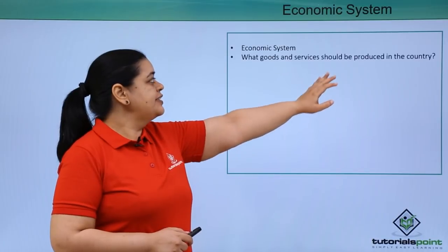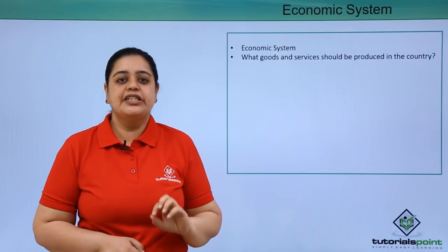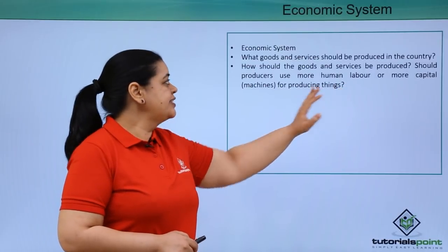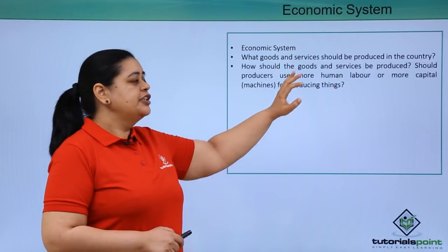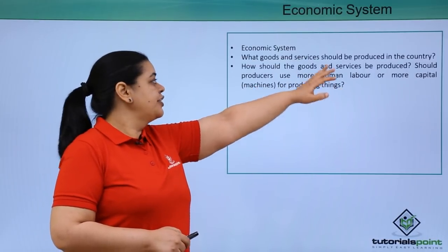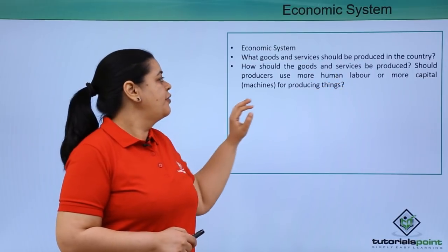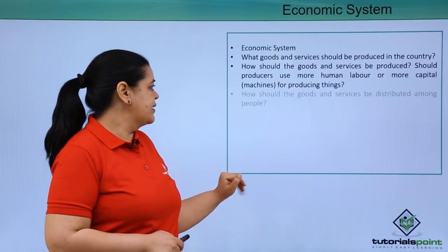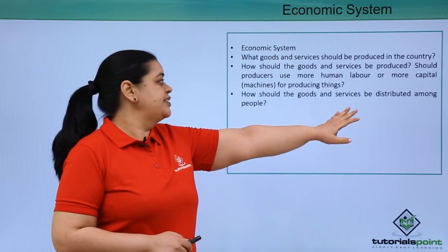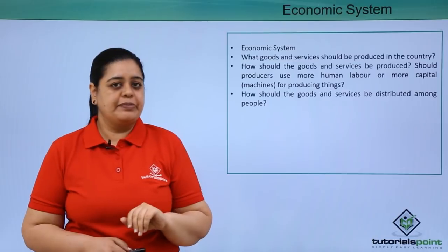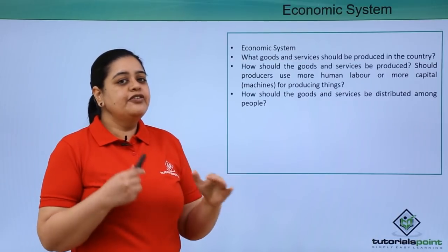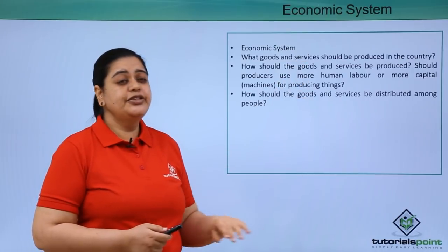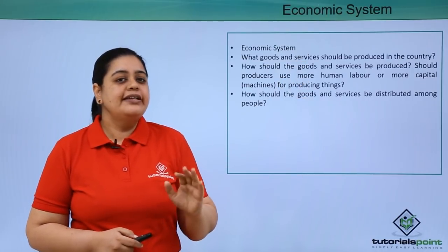What are those three questions? First: what goods and services should be produced in the country? Second: how should the goods and services be produced — should producers use more human labour or more capital, that is machines? Third: how should the goods and services be distributed among people? Depending on what kind of economic system you are adopting, the answers to these three questions will differ.